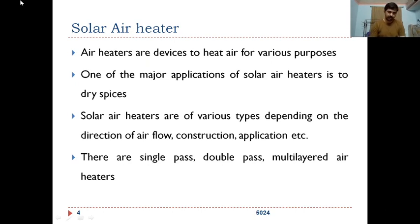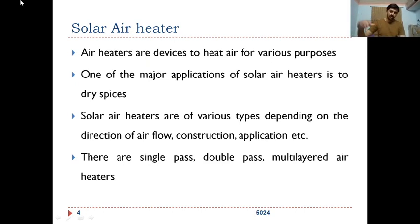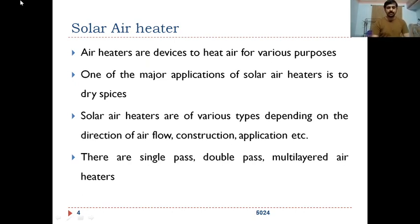Solar air heaters are of various types depending on the direction of airflow, construction, and application. There are single pass and double pass types depending on whether air is passing in a single line or double line, multi-layered air heaters, whether there are partitions between the two passes, or recirculated types.